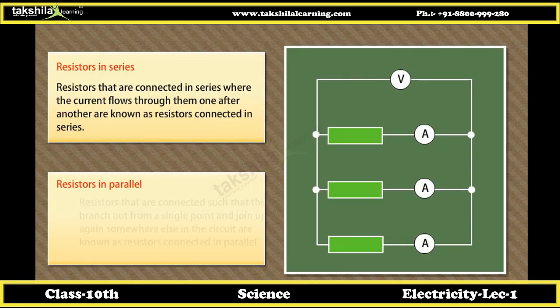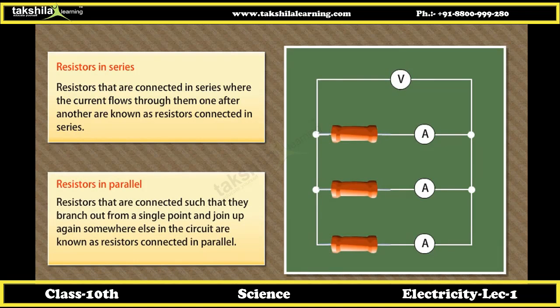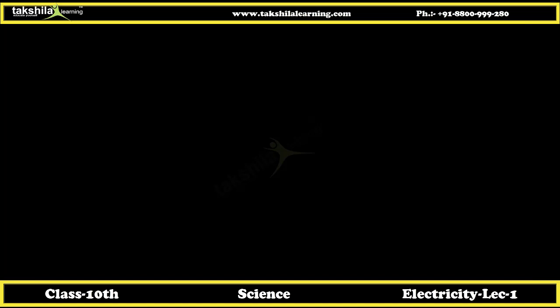Resistors in parallel are connected such that they branch out from a single point and join up again somewhere else in the circuit. Here, the current through each component is the same as if it were the only component present. So the total current flowing through the battery is the sum of the currents flowing through each branch.